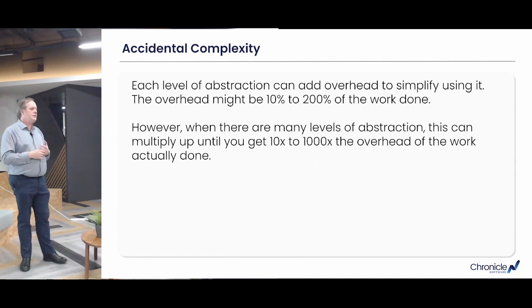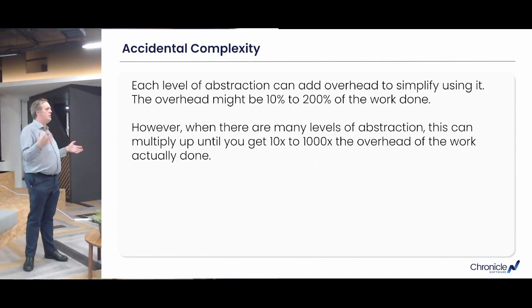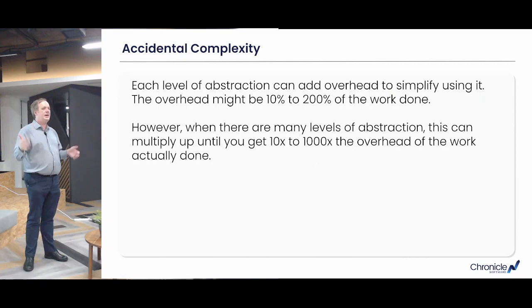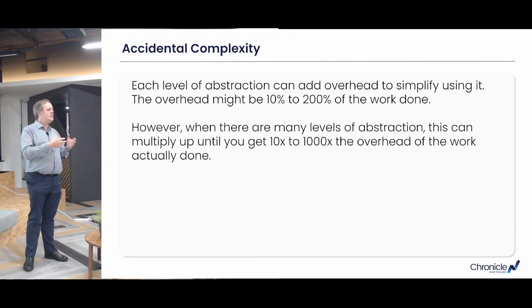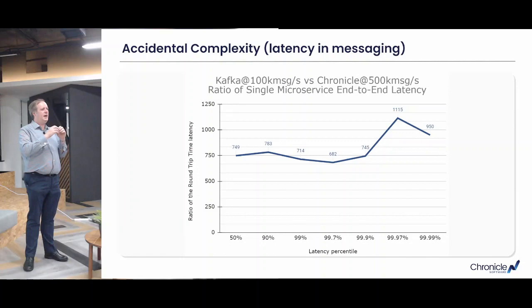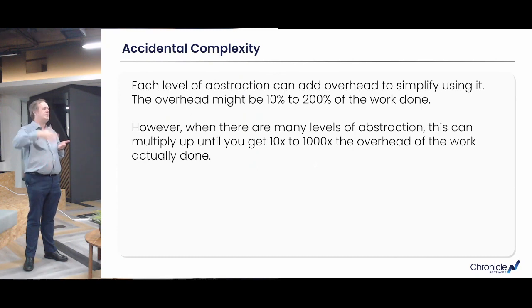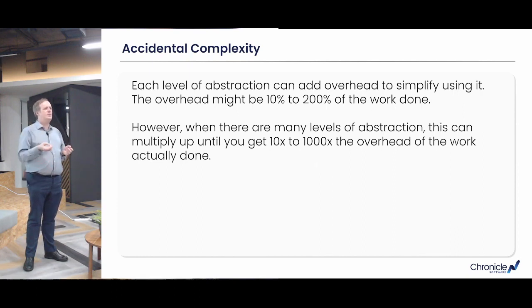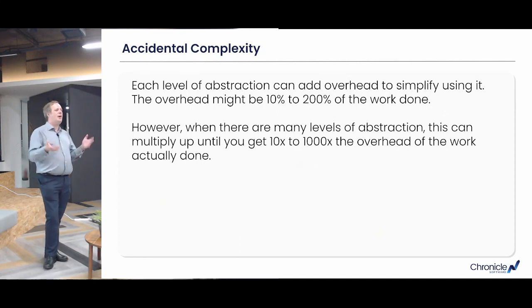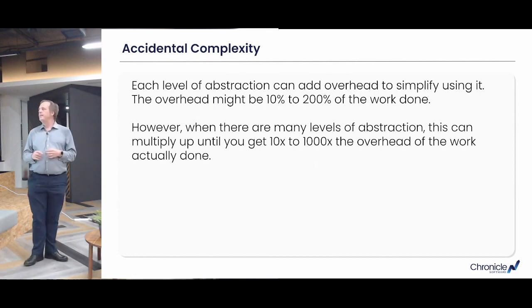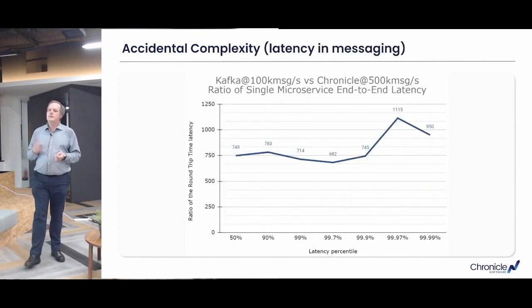How is it possible to get accidental complexity of two or three orders of magnitude? Your application has multiple levels of abstraction, and each level often does a bit more — perhaps a lot more — than is really required. By the time you've run through multiple levels, each one adding a percentage, they multiply together until eventually you can get ten times, a hundred times, or even a thousand times more effort than is strictly required.